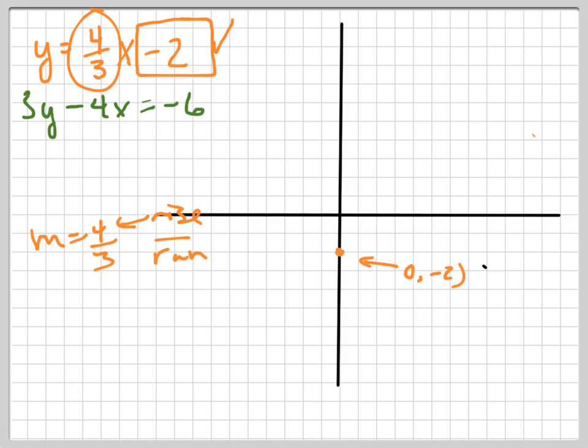So let's start at a point, which is right here. We're starting at (0, -2), and we're going to rise 4: 1, 2, 3, 4, and we're going to run 3: 1, 2, 3. There's our next point right there, which happens to be (3, 2). I'll write that down because it's good sometimes to check.